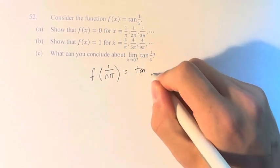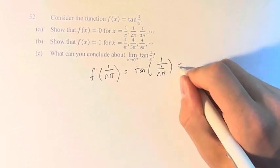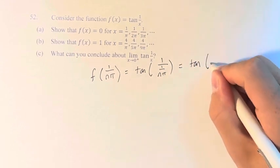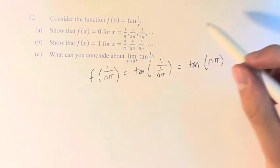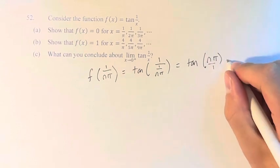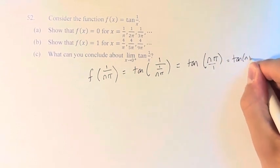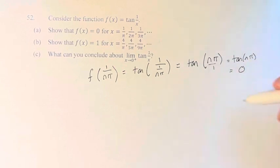1 over a fraction is equal to the fraction flipped. So this is just tan(nπ), which we know is equal to 0 for all values of π.